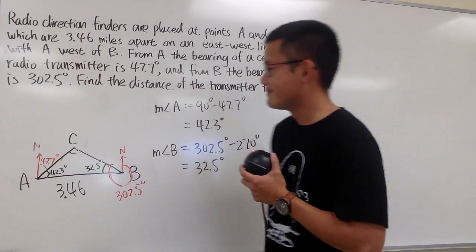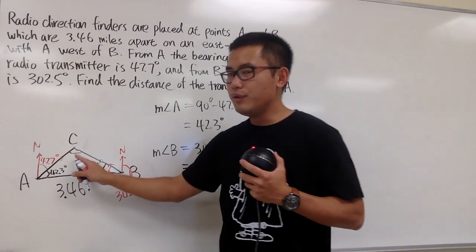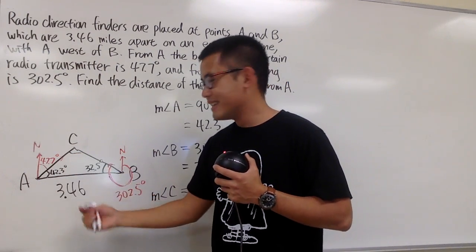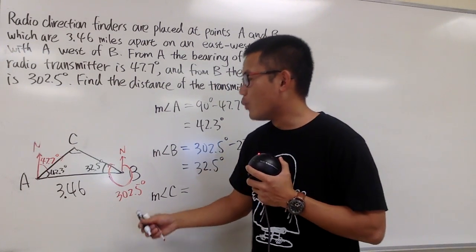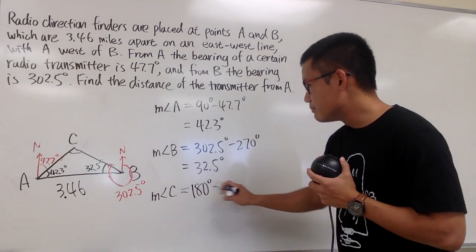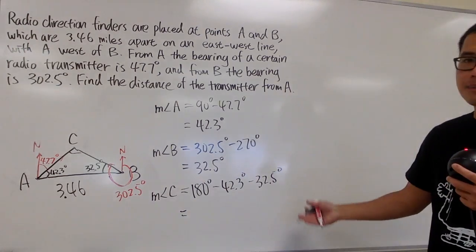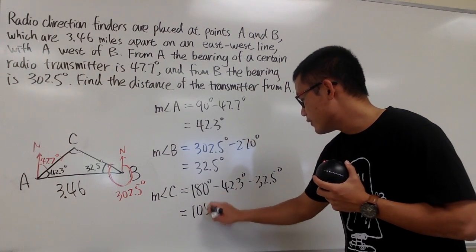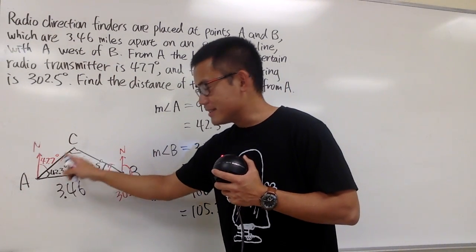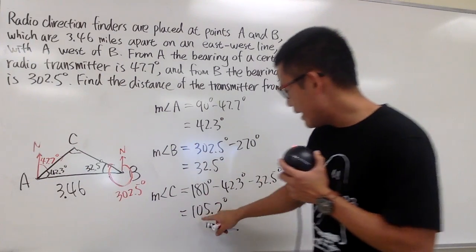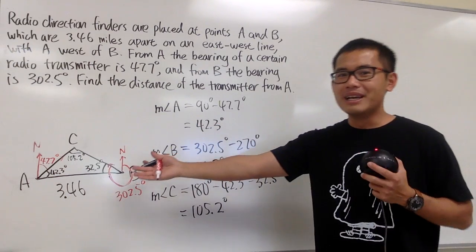Now we find angle C. Since the angles of a triangle sum to 180 degrees, angle C equals 180 minus 42.3 minus 32.5 degrees, which gives 105.2 degrees. Notice this is not a right triangle because angle C is 105.2 degrees. So that's the triangle we have established.